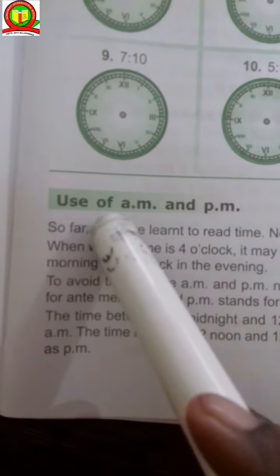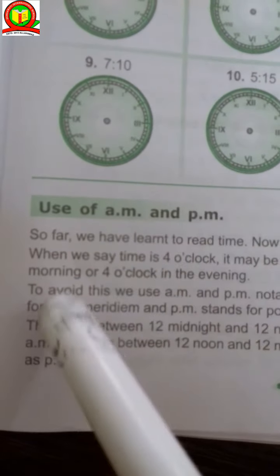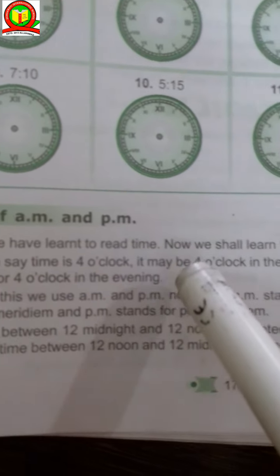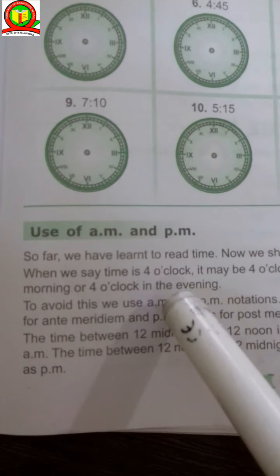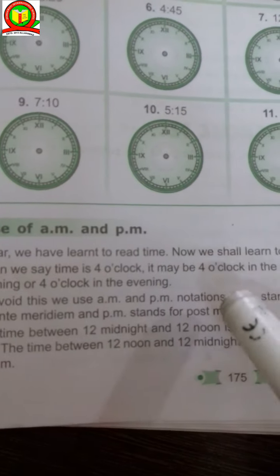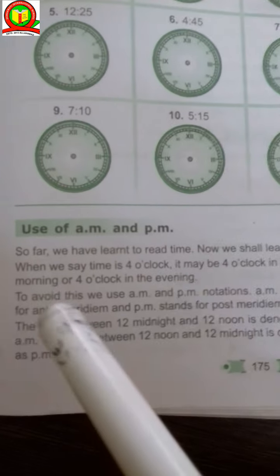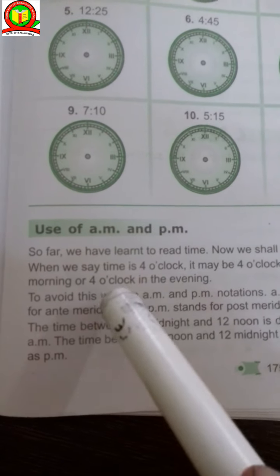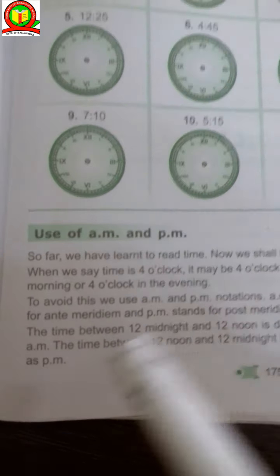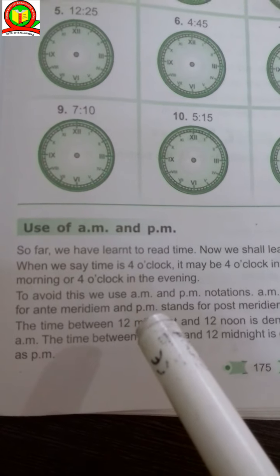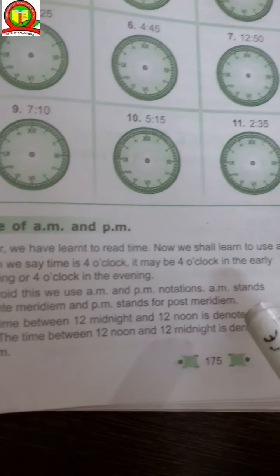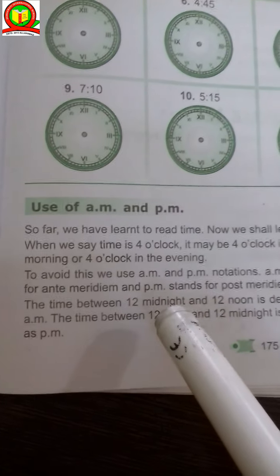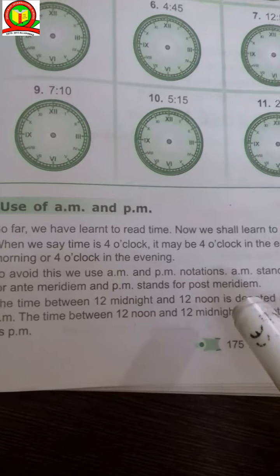How can we use a.m. and p.m.? So far we have learned to read time. Now we shall learn to use a.m. and p.m. When we say the time is 4 o'clock, it may be 4 o'clock in the early morning or 4 o'clock in the evening. To avoid this we use a.m. and p.m. notations. A.m. stands for ante meridiem and p.m. stands for post meridiem.